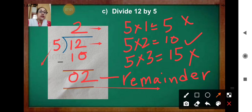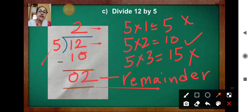You have to take the number which is closer to the dividend — you will not take the greater number. You will not take fifteen because fifteen is greater than twelve. So we take ten: five twos are ten. Note down in your notebook.